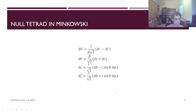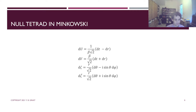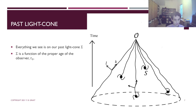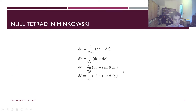In Minkowski spacetime, expressions for the null tetrad in terms of spherical coordinates are given by these equations, where you can take beta equal to one. There is a very simple relation between the spherical coordinates and the null tetrad elements, for a galaxy S at position r, theta, phi and time t. This expression is also true for a freely falling local Lorentz frame situated at S in our cosmological perturbed spacetime, and this will be important later.